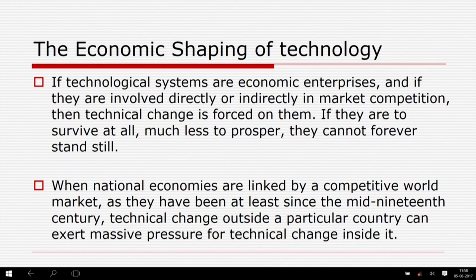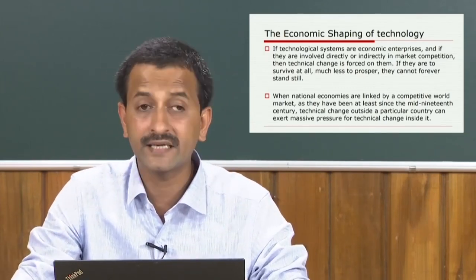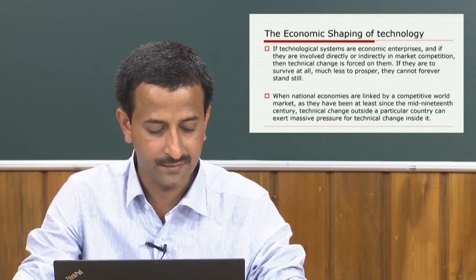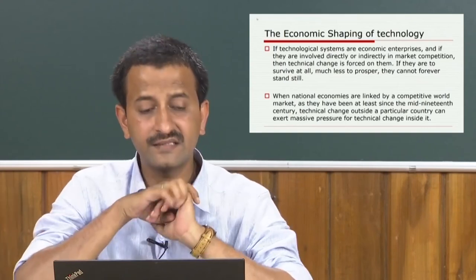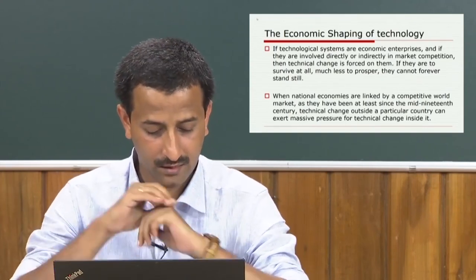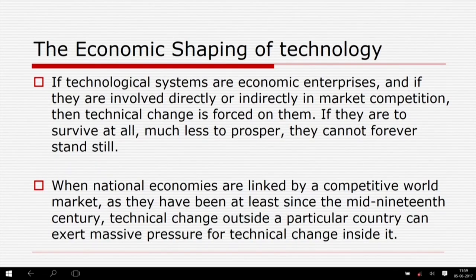Having thus determined — economically as much as technologically — its necessary characteristics, finding the correct filament then became a matter of hunt and try. The precise characteristics of the Edison case are perhaps untypical. Even in his time, Edison was unusual in his conscious individual grasp of the nature of technological systems — therein perhaps lay his success.